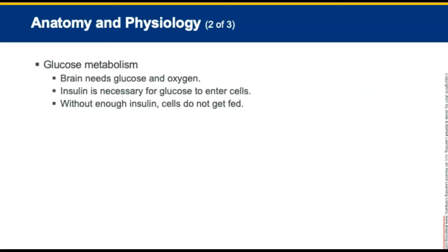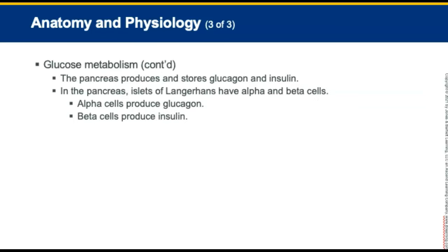Regarding glucose metabolism, the brain needs two things to survive: glucose and oxygen. Insulin is necessary for glucose to enter those cells — insulin is the key that unlocks the door to let glucose into the cells. Without enough insulin, the cells do not get fed. The pancreas produces and stores two hormones: glucagon and insulin. The islets of Langerhans are found in small portions of the pancreas. Within these islets are alpha and beta cells. Alpha cells produce glucagon, and beta cells produce insulin. The pancreas stores and secretes insulin and glucagon in response to the level of glucose in the blood.